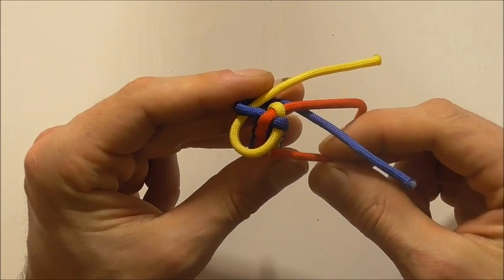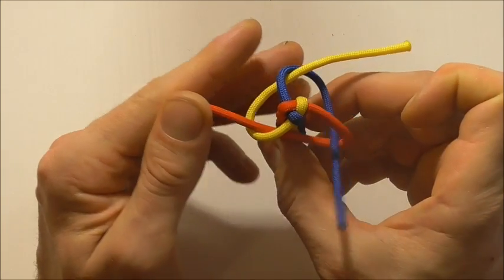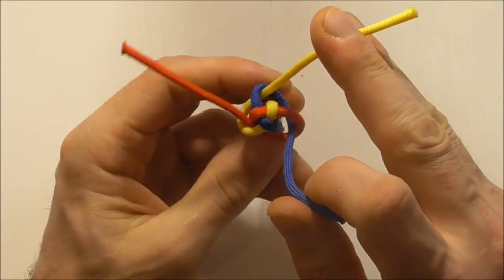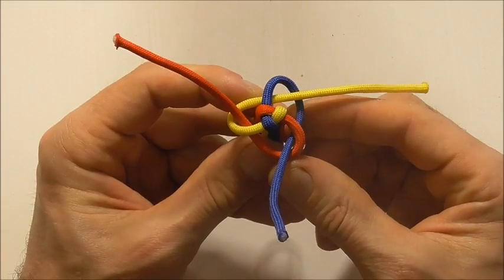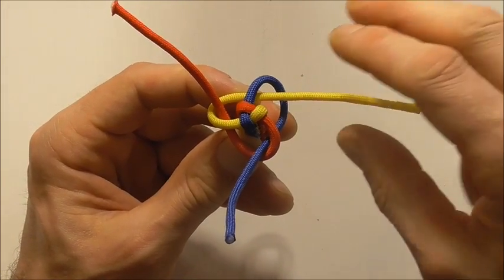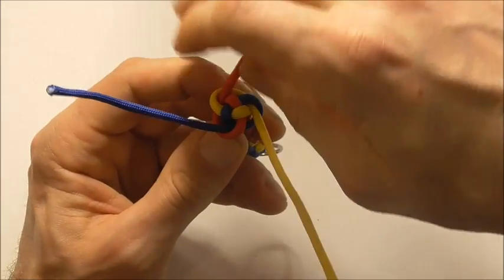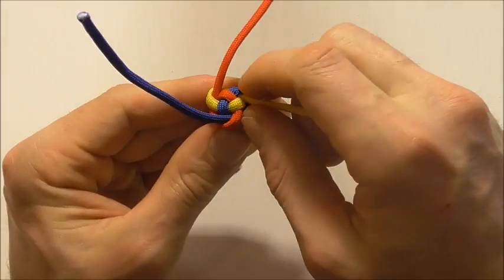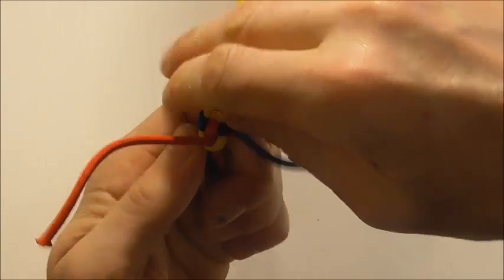And then the red underneath the blue and underneath the yellow which means it will come up through that yellow loop. So just like that. And now as I tighten this up I want to make sure that it's underneath this final crown. So gently draw it together and then give it a final tighten just by pulling on each of these strands.